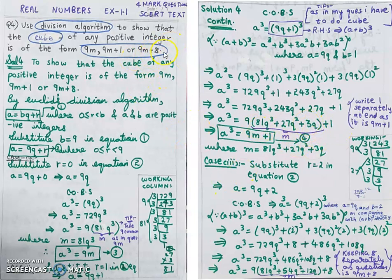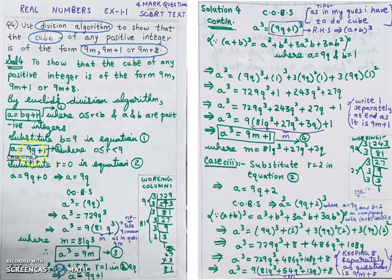Case 3: I have to prove a³ = 9m plus 8. Notice that 8 = 2³, so I substitute r = 2 into the equation. This gives a = 9q + 2. Cubing both sides: a³ = (9q + 2)³.